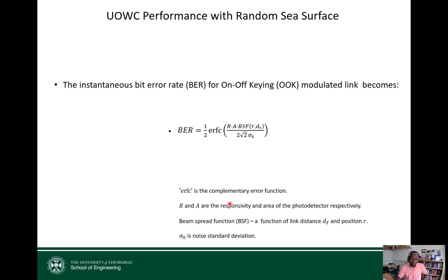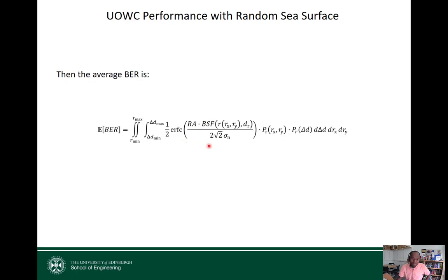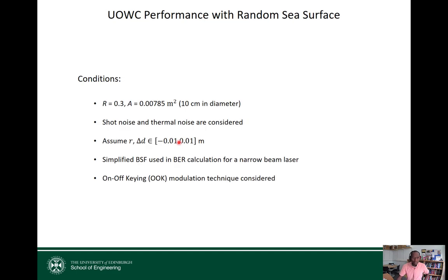Considering simple on-off keying modulation — turning the light on to transmit a bit one and off to transmit a bit zero — the bit error rate (BER) without any misalignment is given by a standard expression. We then take the instantaneous BER and average it over the misalignment variables r and Δd. Solving this expression gives us the average BER performance with the influence of the random sea surface captured.